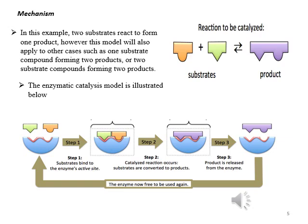In the example given below, two substrates react to form one product. This model can also be applied to other cases such as one substrate forming two products or two substrates forming two products. The reaction is completed in steps: substrates bind to the enzyme active site; the catalyzed reaction occurs converting substrates to products; the product is released from the enzyme; and the enzyme is then free to be used again.